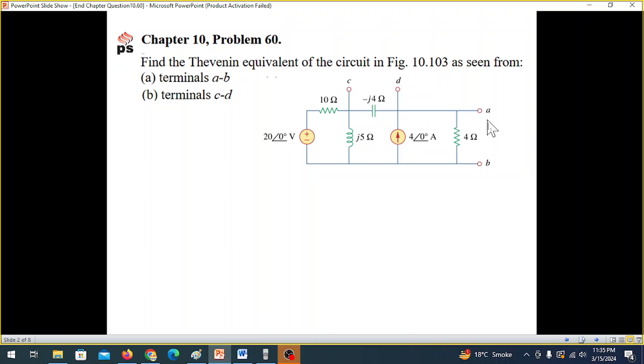So these are the two terminals. This is AB terminal. And this is CD terminal. So basically, this question is in two parts.